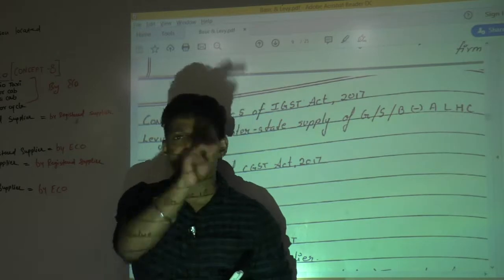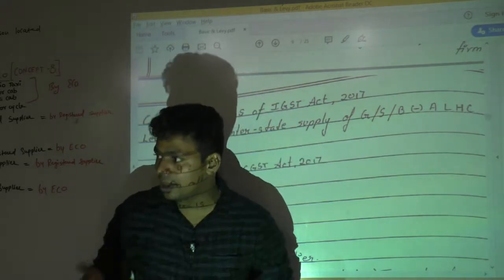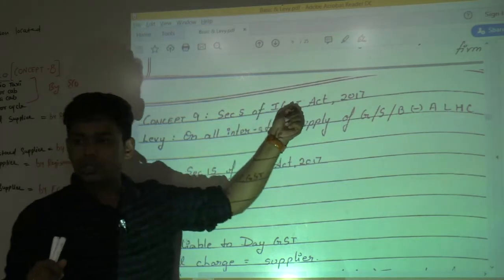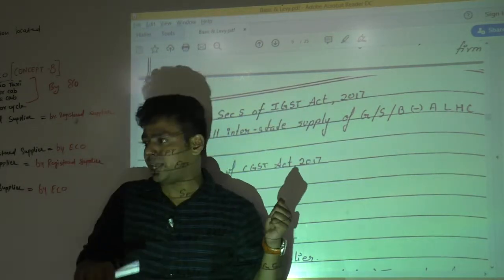This also has some 5 subsections: 5-1, 5-2, 5-3, 5-4, 5-5. Am I clear? 5-1 talks about levy of IGST on all interstate transactions.